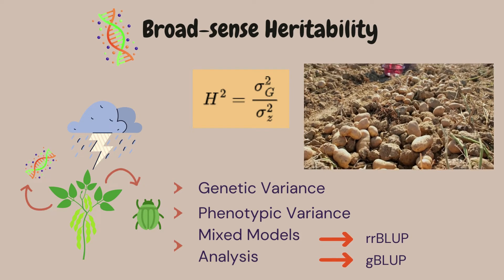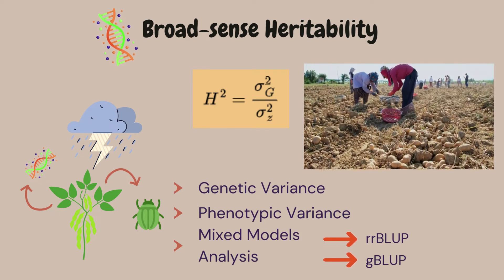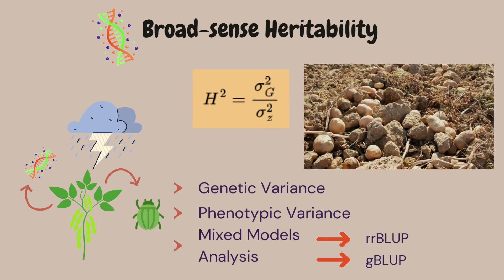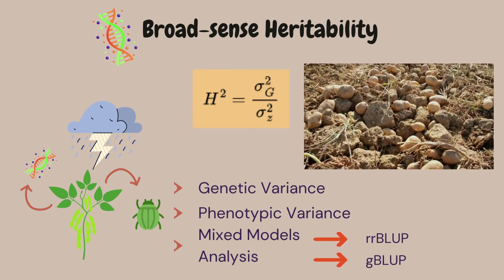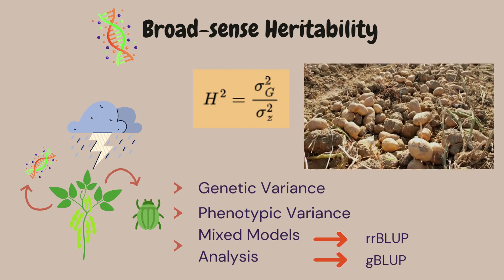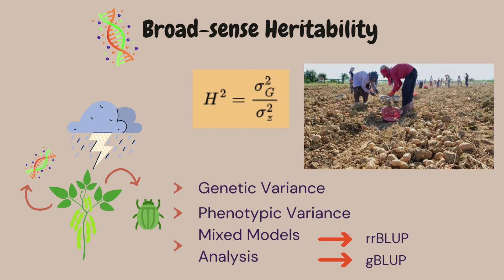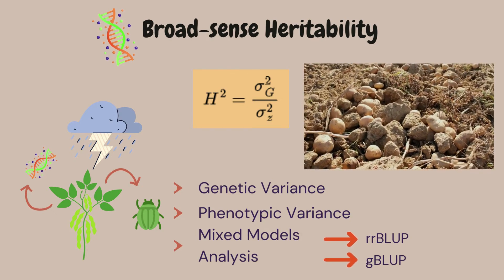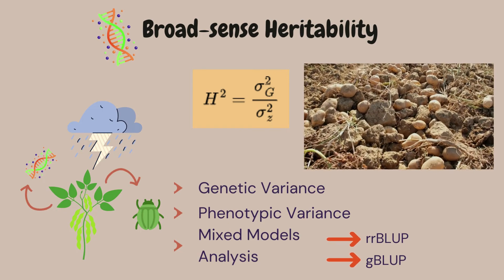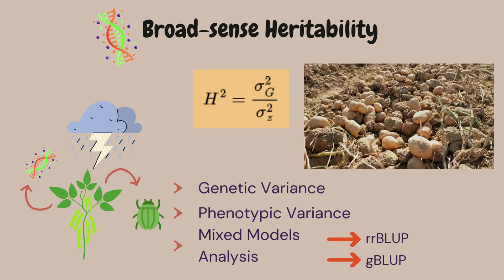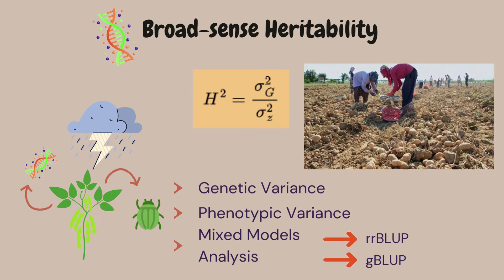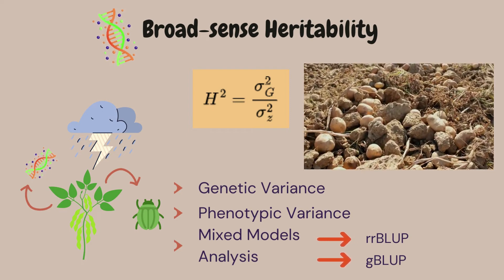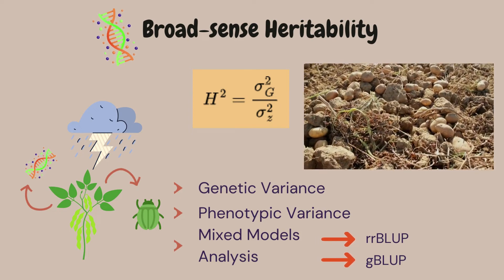Heritability in the broad sense is equal to the genetic variance divided by the phenotypic variance of a population. As the name implies, all the genetic variance of the character in question is considered in the broad sense. We can also say that this variance allows us to know how much of the phenotypic variance in question is due to genetic causes. We can consider that the interactions of experiments in different environments can influence our results, so heritability in the broad sense must be predicted most reliably. For this, proper use of mixed models, for example, is an excellent way to arrive at unbiased results.